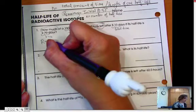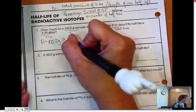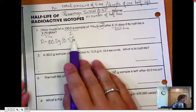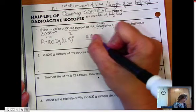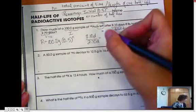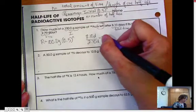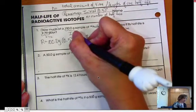So in this problem, remaining equals 100 grams times 0.5 raised to the nth power. And I can find n by knowing the total amount of time, 8.10 days divided by 2.70 days, which is 3. So substitute 3 in place of my n right there.